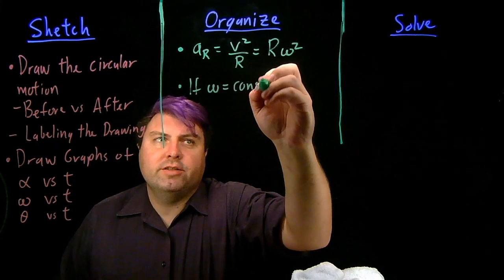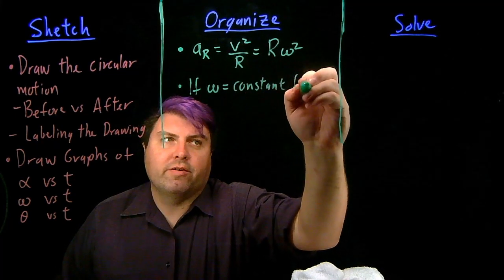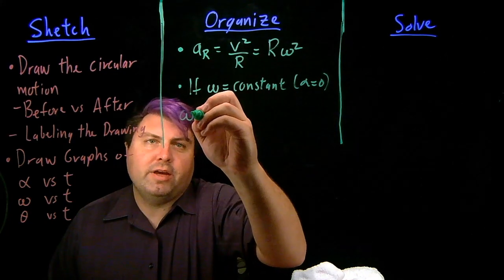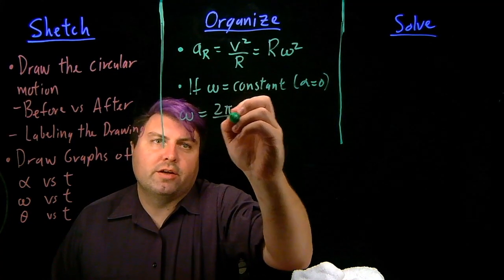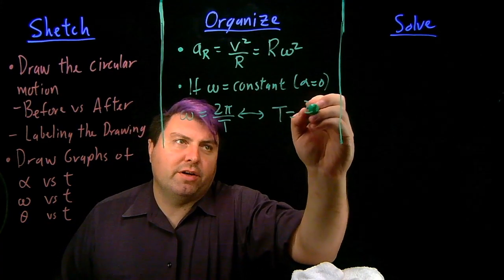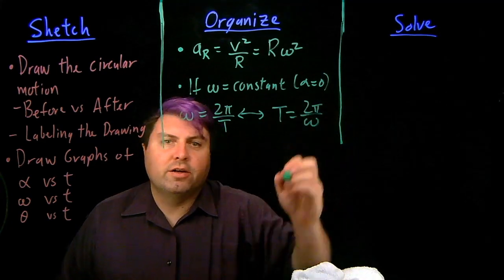If our omega is constant, we're saying alpha is then zero, then we get the relationship that omega is equal to 2 pi over the period. And sometimes it's nice just to rewrite this as period T is 2 pi over omega.